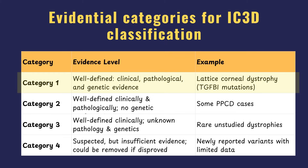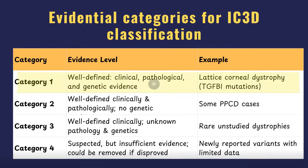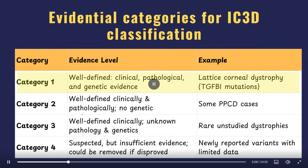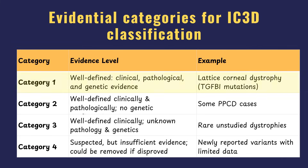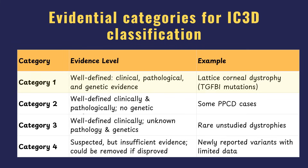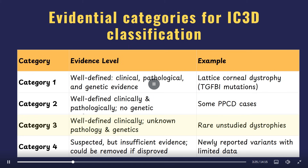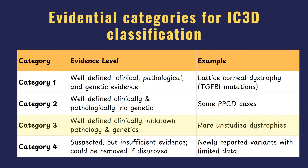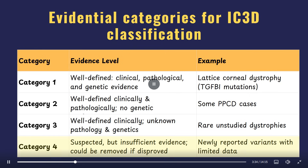In the evidential system there are four categories. Category 1 means well-defined diseases with strong clinical, pathological, and genetic evidence. Category 2 means well-defined clinically and pathologically, but genetic confirmation is lacking. Category 3 means well-defined clinically, however both pathological and genetic evidence are lacking. Category 4 are rare reports with very minimal evidence.